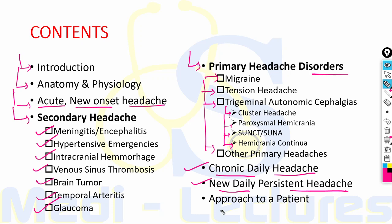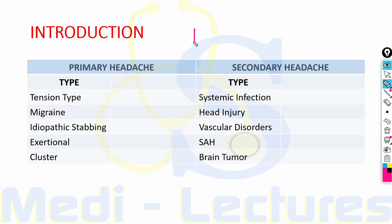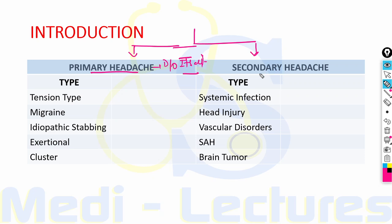When the causes of headache are concerned, these are broadly divided into primary headache and secondary headache. In primary headache, the headache and its associated features are the disorder itself. On the other hand, secondary headaches are caused by an exogenous disorder — it is a manifestation of some other disorder. The most common cause of primary headache is tension type headache, and the second most common is migraine.